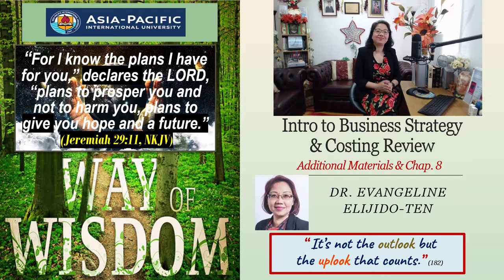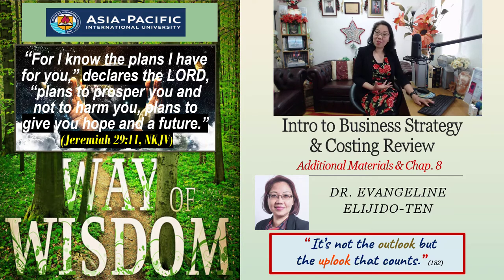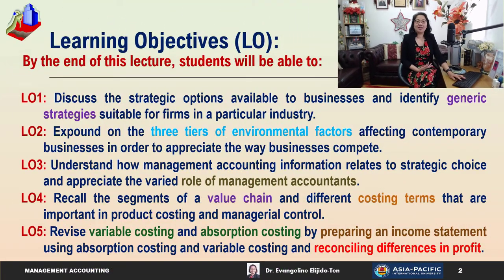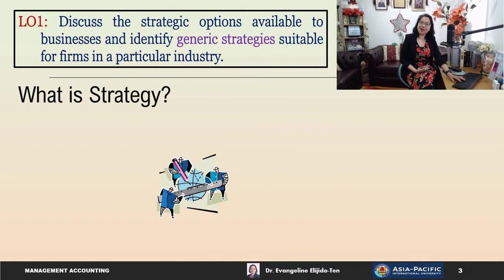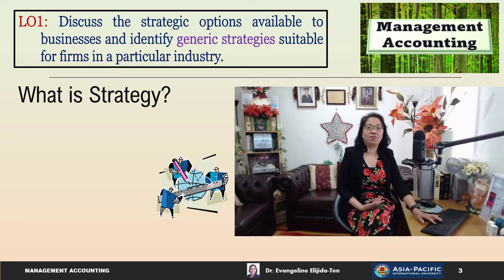We are covering part of chapter 8 of your textbook and some additional materials about business strategy. We will have five learning objectives in this topic. The first three learning objectives will be covered in part A of this lecture, and the last two will be covered in part B. Let's start with learning objective one.